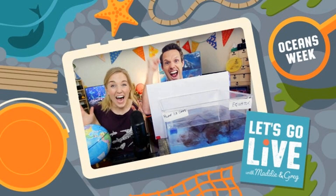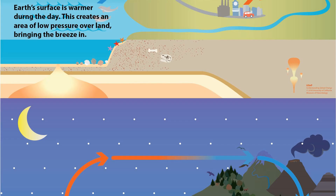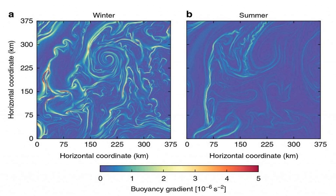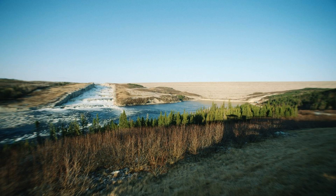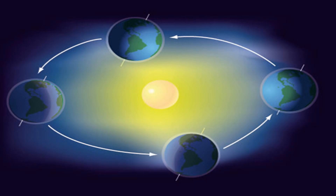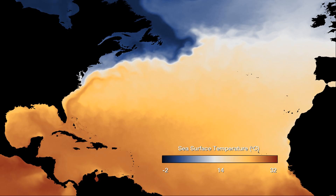Ocean currents can influence the temperature and moisture content of the air above them, which in turn affects the weather patterns in nearby coastal regions. During summer, when warm ocean currents prevail near the coast, they can contribute to the formation of milder and more humid conditions. In contrast, during winter, when cold ocean currents dominate, the air above them can become cooler and drier. These differences in air temperature and moisture content, driven by ocean currents, are an important factor in determining seasonal weather patterns, including temperature fluctuations, precipitation levels, and even the formation of coastal fog.